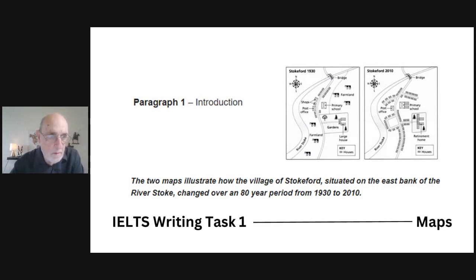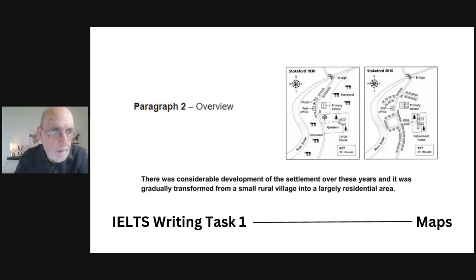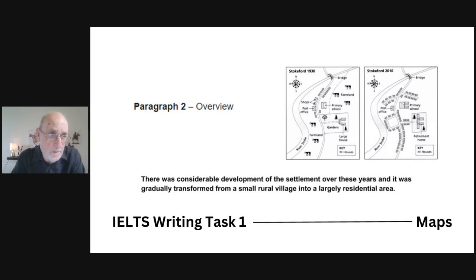Once the introduction is complete, we move to paragraph two, the overview. Here we think about both maps together, considering the four main features we've identified, and give a summary of both maps overall. For example: 'There was a considerable development of the settlement over these years, and it was gradually transformed from a small rural village into a largely residential area.' This second paragraph is not very long, but it gives a clear overview of both maps.